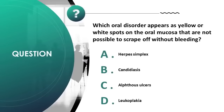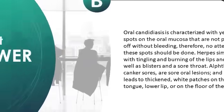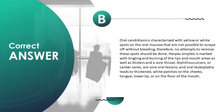Which oral disorder appears as yellow or white spots on the oral mucosa that cannot be scraped off without bleeding? A) herpes simplex, B) candidiasis, C) aphthous ulcers, D) leukoplakia. Correct answer is B. Oral candidiasis is characterized by yellow or white spots on the oral mucosa that cannot be scraped off without bleeding; no attempts to remove these spots should be made.